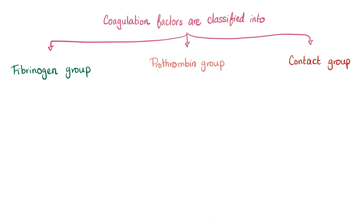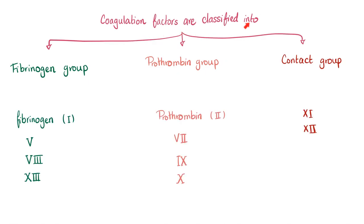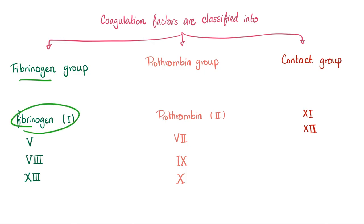Coagulation factors are classified into three main groups: fibrinogen group, prothrombin group, and contact group. Members of the fibrinogen group: fibrinogen is on top — because it's called the fibrinogen group. Then we have factor 5, factor 8, and factor 13. How to remember: it's called the fibrinogen group so remember fibrinogen (factor 1). Then 5 plus 8 equals 13.